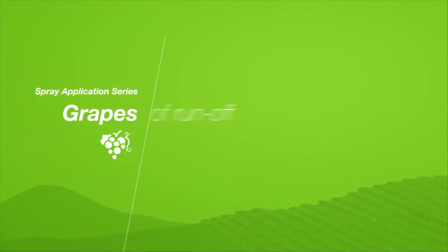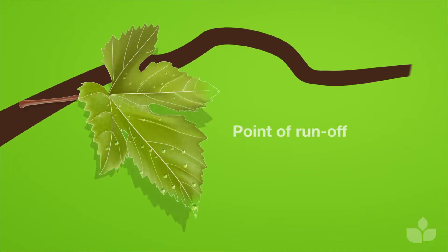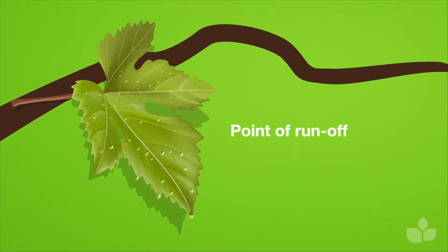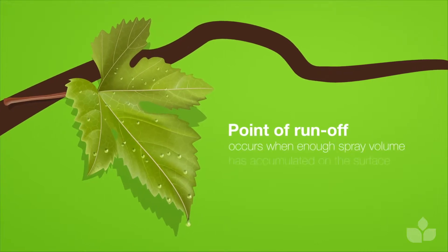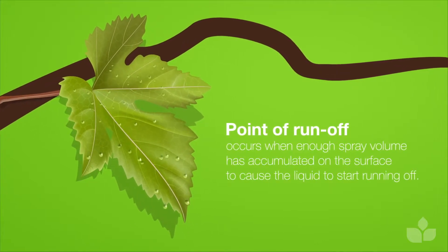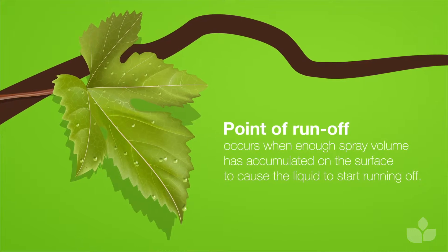Understanding the point of runoff when spraying: many crop protection labels refer to spraying to the point of runoff, but what exactly does that mean? It's when spray starts to run off the surface of a leaf or bunch.